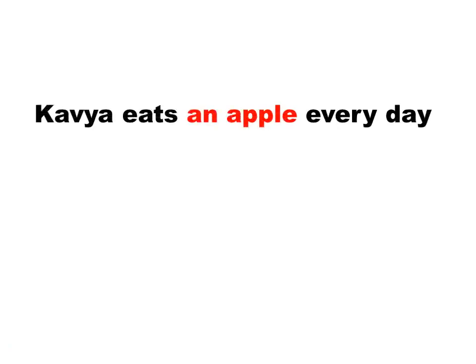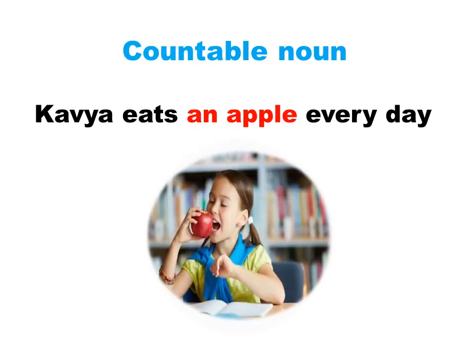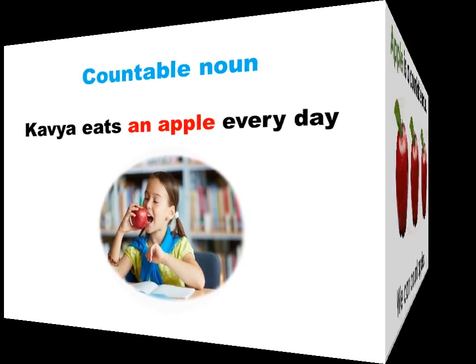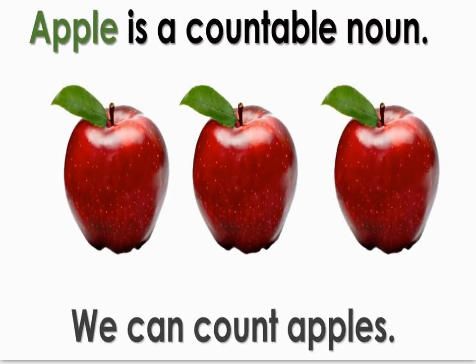Caviar eats an apple every day. Apple is a countable noun. Every day, Caviar eats an apple — apple is a countable noun. All the fruits are countable nouns. Dear children, how many apples are there? Here, three apples you can see. Are you able to count these apples? Yes, we can count these apples. So apple is a countable noun. You can count them — apples, bananas, or pineapples. So all the fruits come under countable nouns.